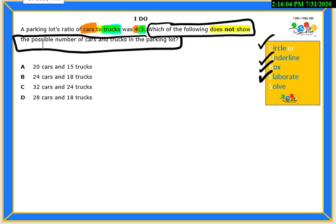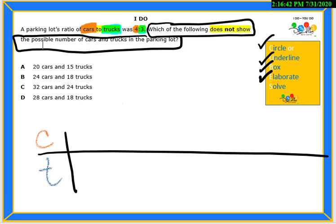is to solve the problem. I am looking for the one that does not show a possible ratio of cars to trucks. I will set up a ratio table, also known as a proportional box, comparing cars to trucks. We have the ratio of 4 to 3.